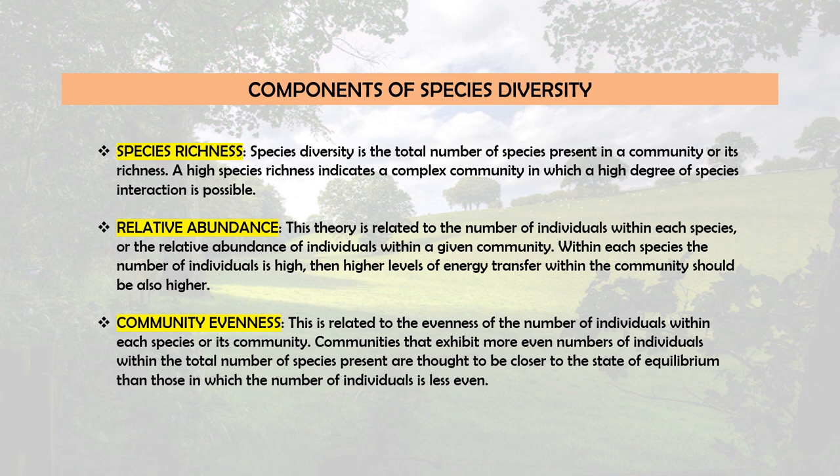The third parameter is community evenness, which relates to the evenness of the number of individuals within each species. Communities that exhibit more even numbers of individuals across the total number of species present are thought to be closer to a state of equilibrium. Because energy flow within ecological systems is constantly changing, consistent patterns of evenness within a given community can be equated with community stability.